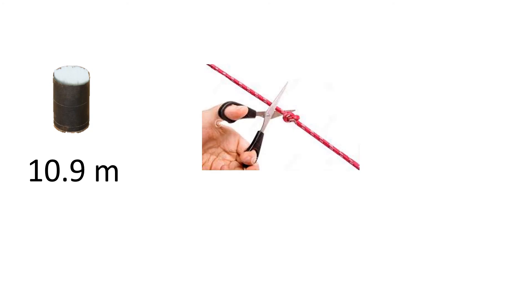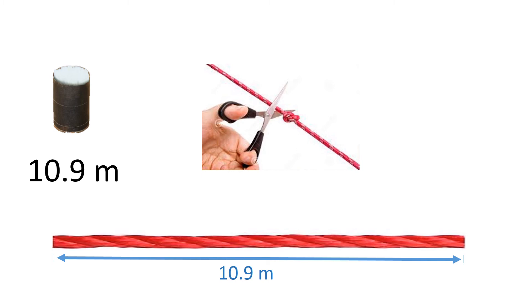Now that we know that the fertilizer in this tin must cover 10.9 meters, we need to measure the string and cut it to this length. This 10.9 meter length of string will help us apply our fertilizer correctly in the field. Simply place the string on the ground alongside the cane row, then spread all the fertilizer from the tin evenly over the cane row using the string as a guide. Then refill the tin, move the string along, and repeat the process. Continue in this fashion until the entire field has been fertilized.